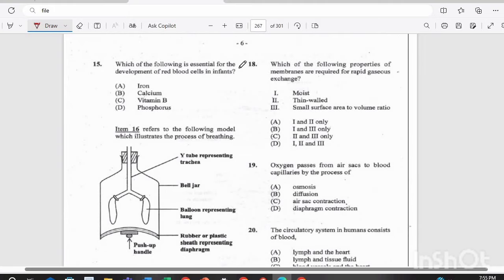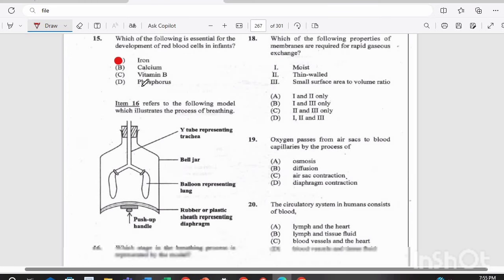Question 15. Which of the following is essential for the development of red blood cells in infants? Is it A, iron, B, calcium, C, vitamin B, or D, phosphorus? I guess everybody should know it's iron.